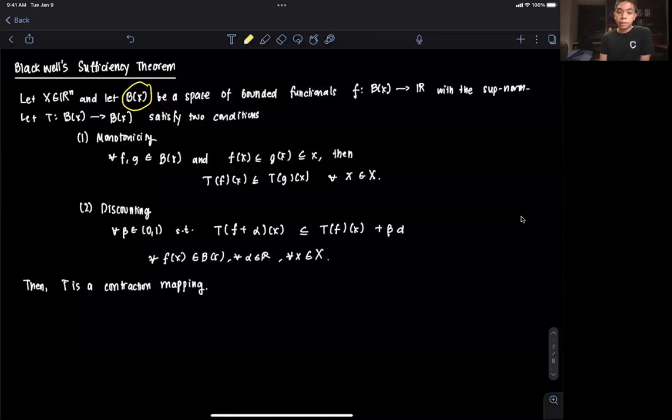The other property we need to discuss is discounting, which states that for all beta in the open interval (0,1), this expression holds true: the operator at f plus alpha is less than or equal to the operator at x plus beta times alpha.